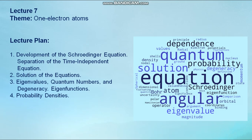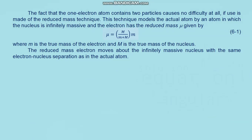The fact that the one-electron atom contains two particles causes no difficulty at all if use is made of the reduced mass technique. This technique models the actual atom by an atom in which the nucleus is infinitely massive and the electron has a reduced mass mu, where m is the true mass of the electron and M is the true mass of the nucleus. The reduced mass electron moves about the infinitely massive nucleus with the same electron-nucleus separation as in the actual atom. Since the infinitely massive nucleus must be completely stationary, it is necessary to treat only the motion of the reduced mass electron in the model atom.